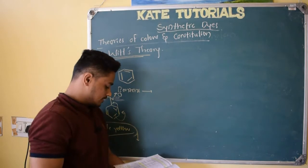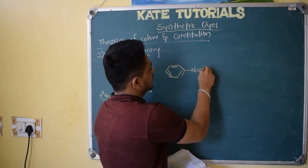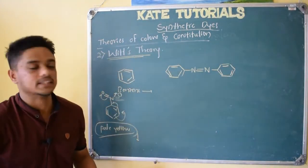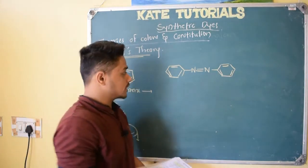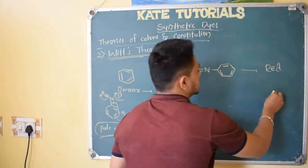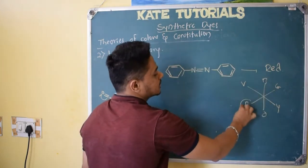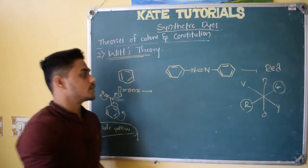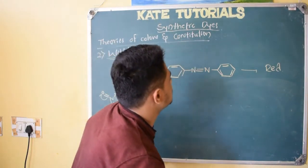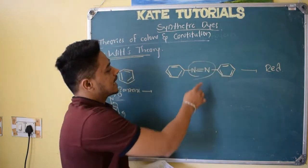At 450 nm — using VIBGYOR — this lies near the violet color region. The complementary color of violet is yellow, so it appears pale yellow. This happened because of the chromophore — the nitro group — which decreased the HOMO-LUMO energy gap, decreased the energy required for transition, and therefore increased the wavelength. Another example: azobenzene — benzene ring, N double bond N, benzene ring — appears red.